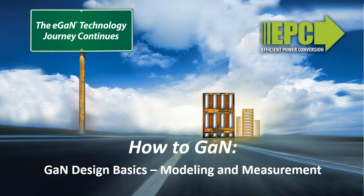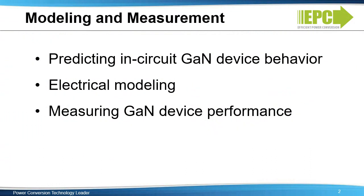In this video, in our How To GAN series, the measurement and modeling of GAN transistors for predicting actual in-circuit behavior is discussed. This video will focus on how best to understand and predict the actual in-circuit behavior of GAN devices once layout has been completed. Although measurement and modeling are very different, they complement each other when attempting to understand real-world behavior. The initial discussion will focus on the electrical modeling of GAN devices and conclude with a discussion on the requirements and limitations when directly measuring in-circuit behavior.